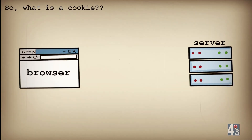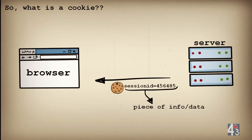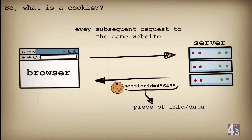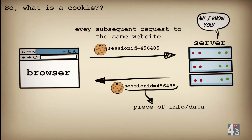Defining what a cookie is makes more sense now. Cookies are small pieces of information or data that a website or web server sends to your browser via the set-cookie header, to be stored on your computer's hard disk. The next time you make a request on the same website, your browser sends the cookie via the cookie header along with the request so the website can identify you.